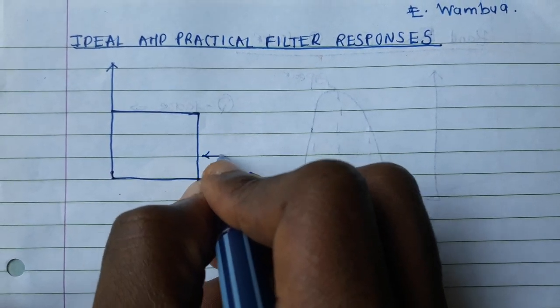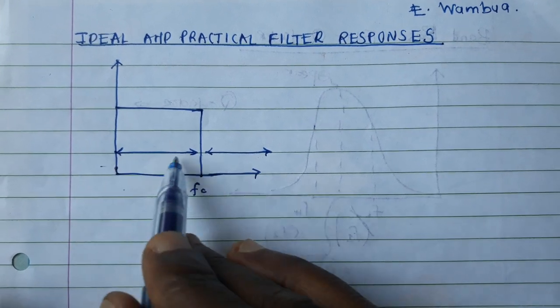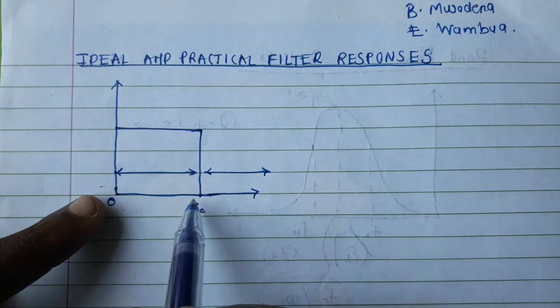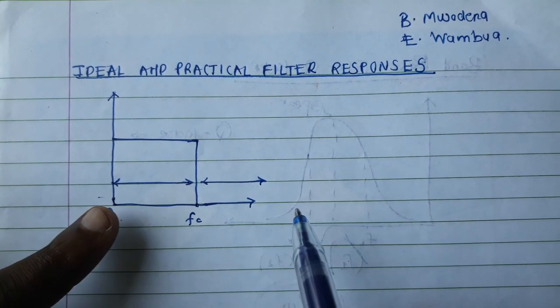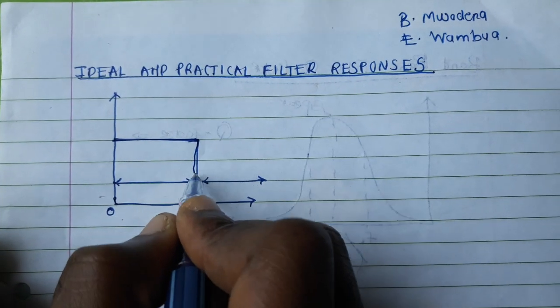So these are the unwanted frequencies and these are the wanted frequencies. The unwanted frequencies within this range from zero to fc, we would like to have these frequencies. But any frequency that is beyond fc goes to zero immediately. No roll-off, nothing.